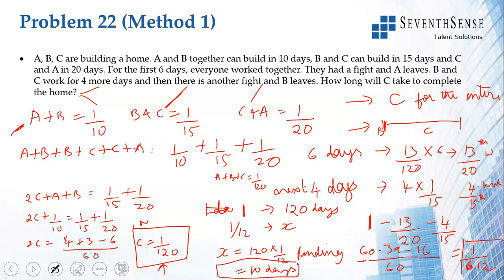To summarize: A+B = 1/10, B+C = 1/15, C+A = 1/20 from the problem. Adding gives 2(A+B+C) = 13/60, so A+B+C = 13/120. All three work 6 days doing 13/20 of the work. Then A leaves; B and C work 4 days doing 4/15 of the work. Subtracting from 1 gives 1/12 remaining. Adding equations 2 and 3 and substituting A+B = 1/10 gives C = 1/120, meaning C alone takes 120 days for the full work.